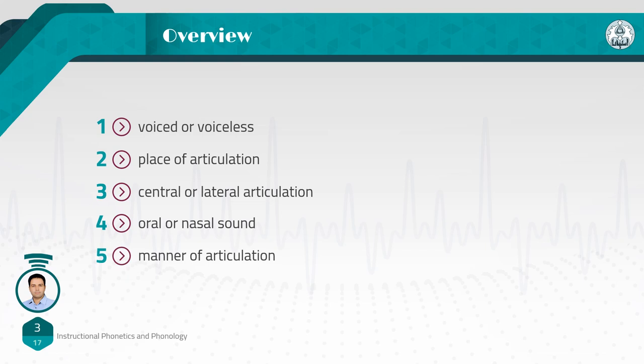Last session, we talked about manner of articulation. If you remember, we said that some consonants are called stops, and we have two types of stops: oral stop and nasal stop. We also talked about another manner of articulation called fricative. Some sounds like 'sh,' 'f,' or 'th' are called fricatives because there is close approximation of two articulators, so the air is partially obstructed and a turbulent stream of air is produced.